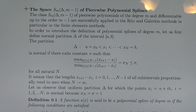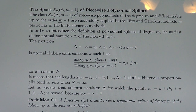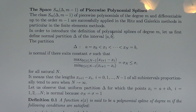Welcome to the next part of the lecture on Calculus of Variations. Today we shall speak about piecewise polynomial splines. The space S_m Δ_{m-1} of piecewise polynomial splines of degree m, differentiable up to order m minus 1, are successfully applied in the Ritz and Galerkin methods, in particular in the finite elements methods. In order to introduce the definition of polynomial splines of degree m,